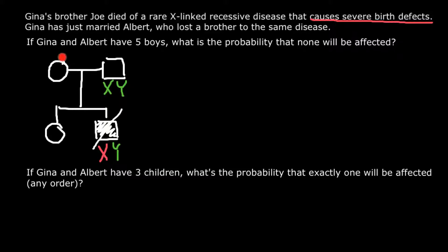But his mother, being phenotypically normal, must be a carrier. She has one defective X chromosome and one normal X chromosome. Because this is a recessive X-linked genetic disorder, the mother was phenotypically normal since the defective allele on one X chromosome was balanced by the dominant allele on the other X chromosome. What is the probability for Gina to be a carrier just like her mother? We can find this by building a Punnett square for this family.